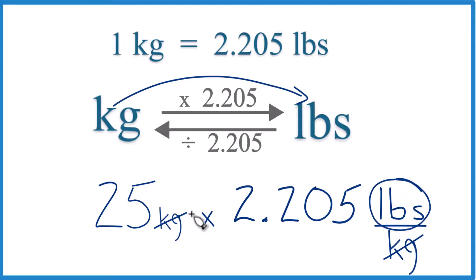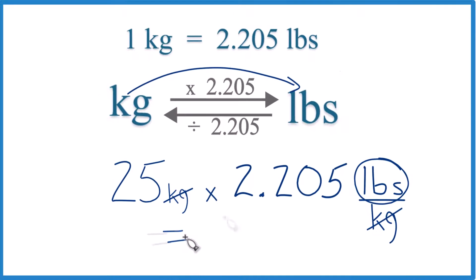So 25 times 2.205 pounds, that equals 55.125. I'm going to call it 55.3. In the units, we're going to pounds, right? Pounds is all that's left here. So that ends up being 55.13 pounds.